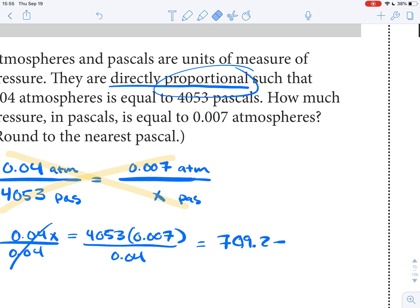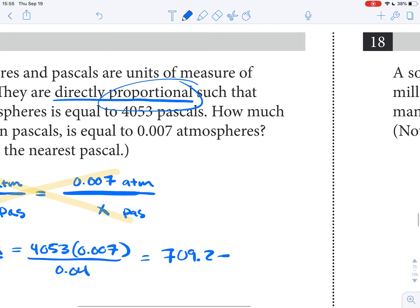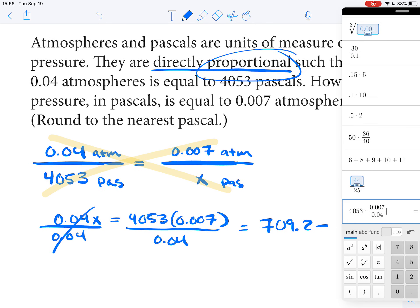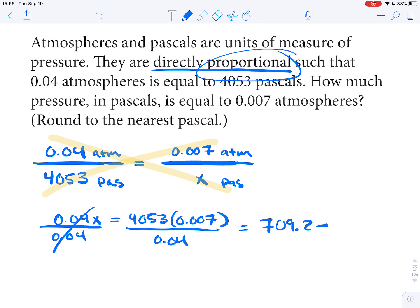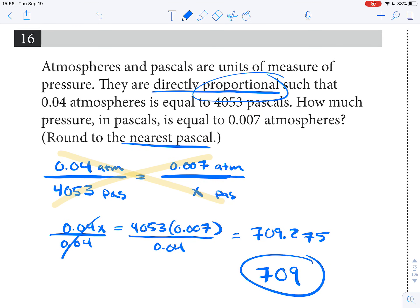So 709.27. I can't get that zero right, I can't even select the things right. Let's try this again. It's 709.2—it doesn't matter, 0.275, because they tell us to round it to the nearest pascal. So since it was 0.2, it's just getting rounded to 709. There we go, 709.